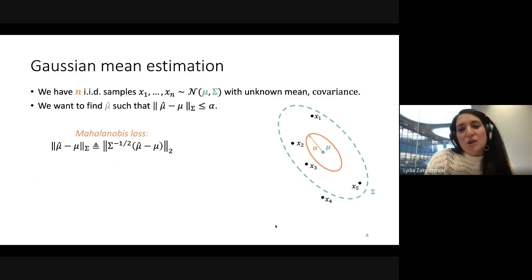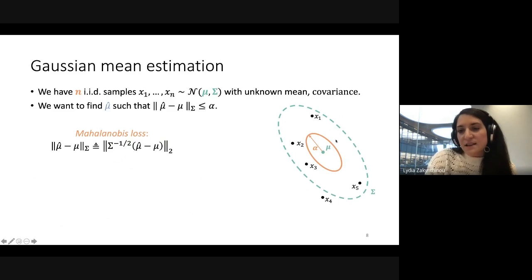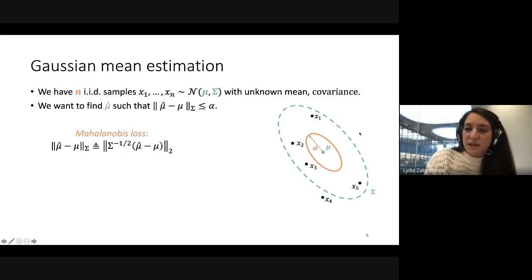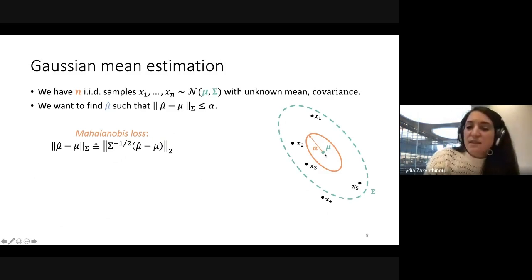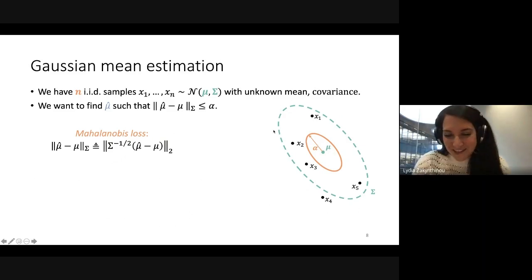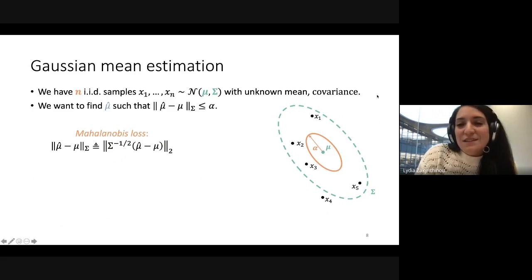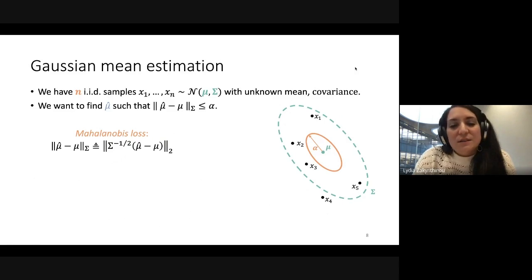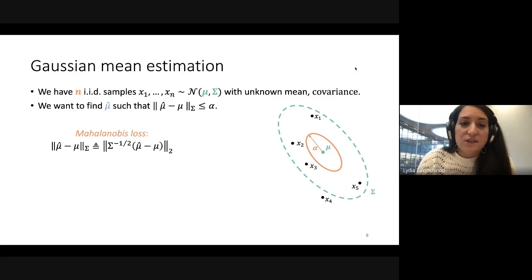Even more interestingly, in the case where the covariance matrix is not spherical, what we really want is that the error in every direction scales with the variance of the data in that direction. In directions of small variance we need much smaller error — the component of mu hat minus mu in that direction must be much smaller than the error allowed in directions of large variance. This is a natural way to define error because the allowed error in every direction scales with the uncertainty already present in the data in that direction.